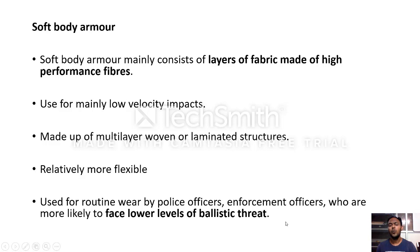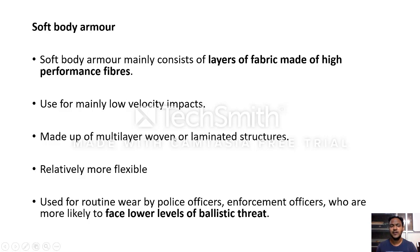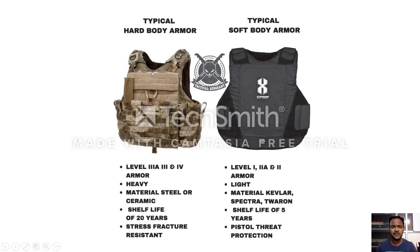Soft body armor is used for routine wear by police and law enforcement officers who are likely to face a lower level of ballistic threat. The disadvantage with soft body armor is that in order to give ballistic protection, multiple layers of woven or laminated structures must be used, which creates discomfort and increases weight. In the diagram, you can see that hard body armor is heavy, made of steel or ceramic, and has a long shelf life and stress fracture resistance.